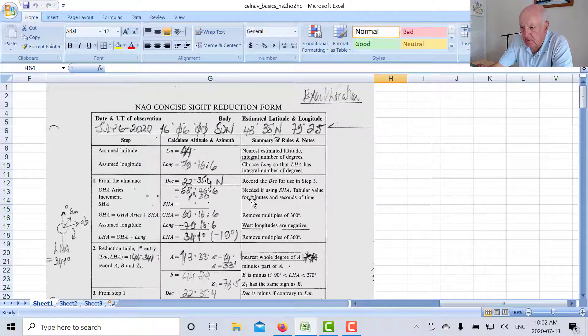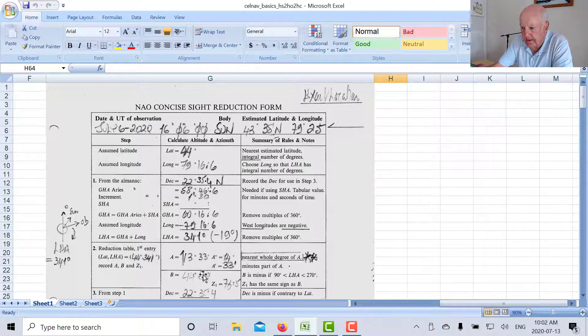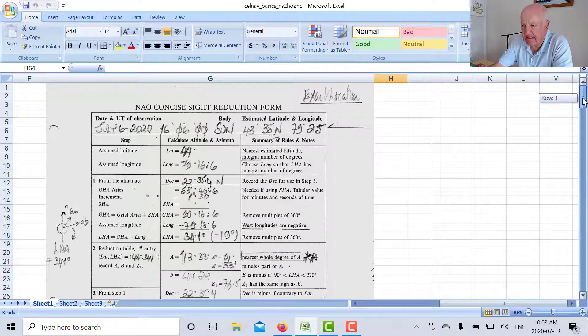The local hour angle is the difference between your Greenwich hour angle of the sun and your longitude. So the sun's Greenwich hour angle is 60 degrees 16.6 minutes. So you pick your assumed longitude so that these minutes cancel out. So instead of 79.25 I'm using 79.16.6.